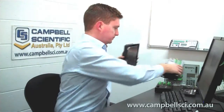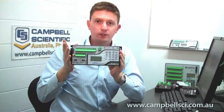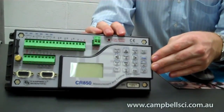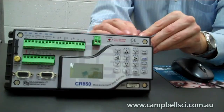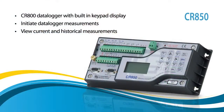In addition to the CR-800, we also sell the CR-850. It's exactly the same as the CR-800 — same number of channels, same programming and everything else — but it has an added keypad display. Using the keypad, you can view the current measurements on the logger, look through what data is being stored, and initiate program operations like MeasureNow or StoreNow using the keypad.